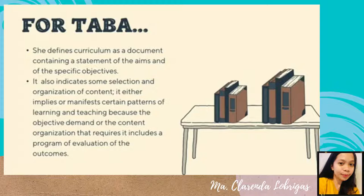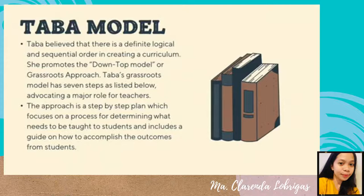Taba believed that there is a definite logical and sequential order in creating a curriculum. She promotes the down-to-top model or grassroots approach. Taba's grassroots model has seven steps, advocating a major role for teachers. The approach is a step-by-step plan which focuses on a process for determining what needs to be taught to students and includes a guide on how to accomplish the outcomes from students.